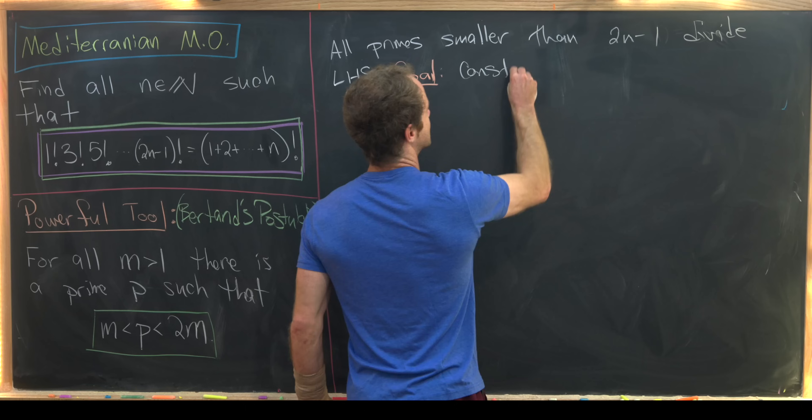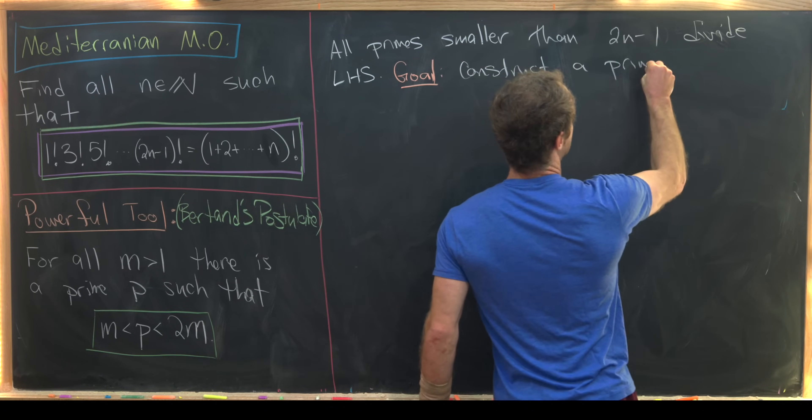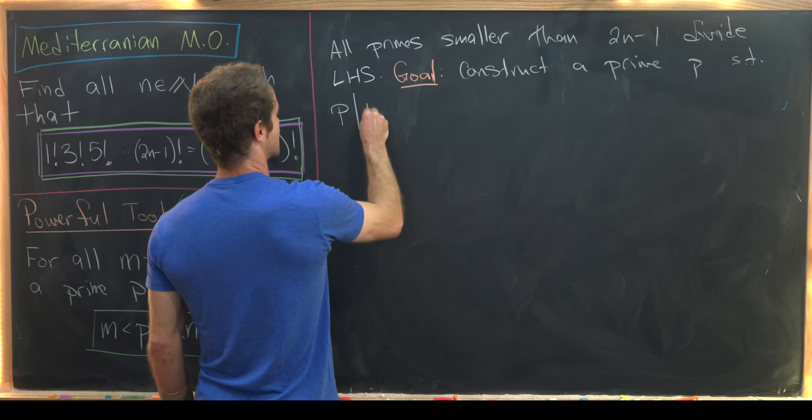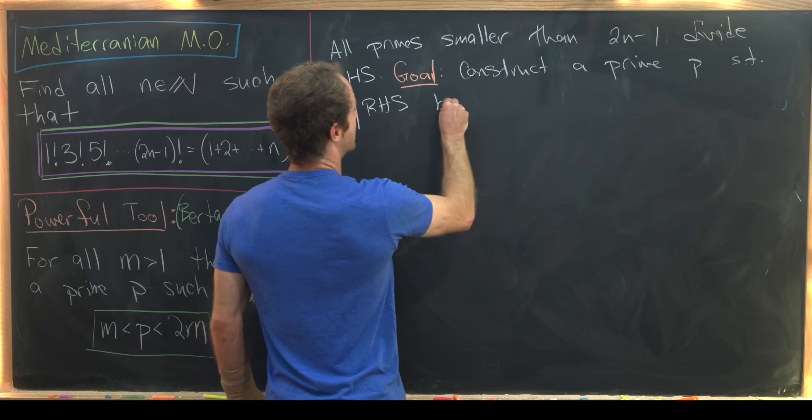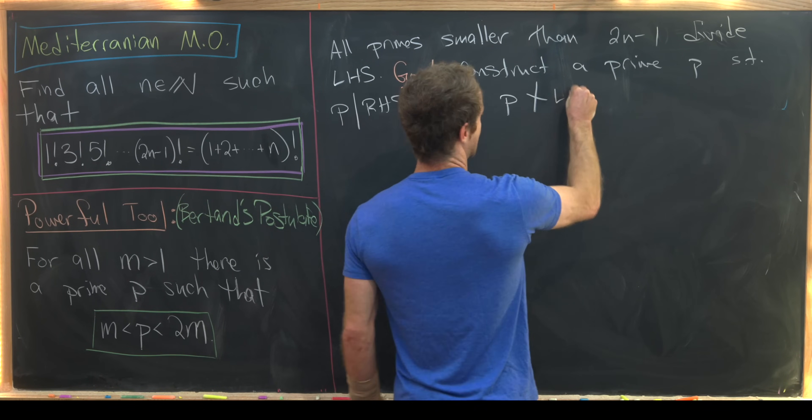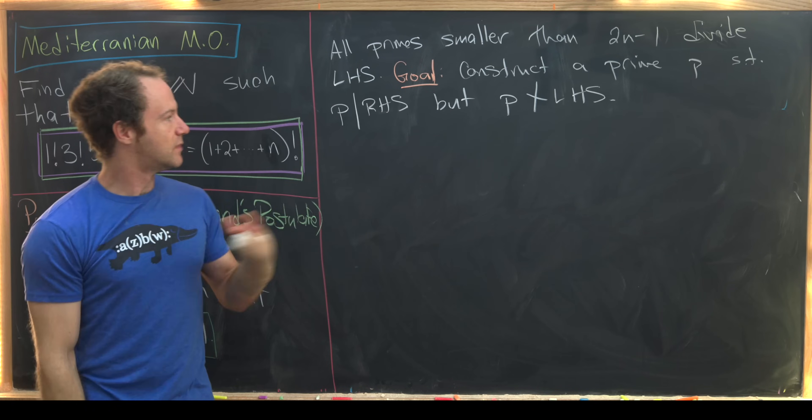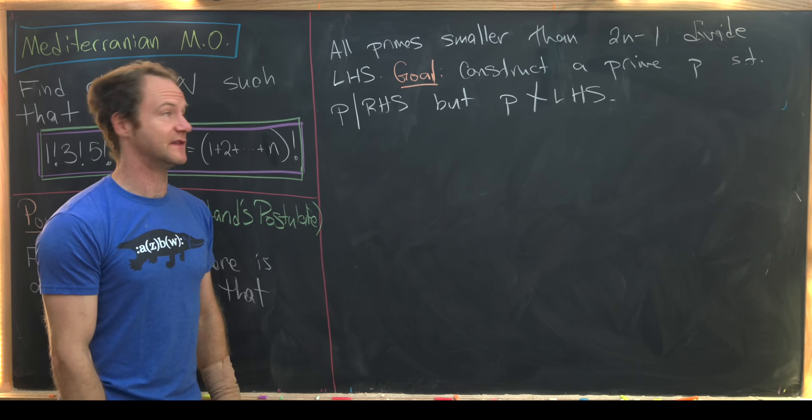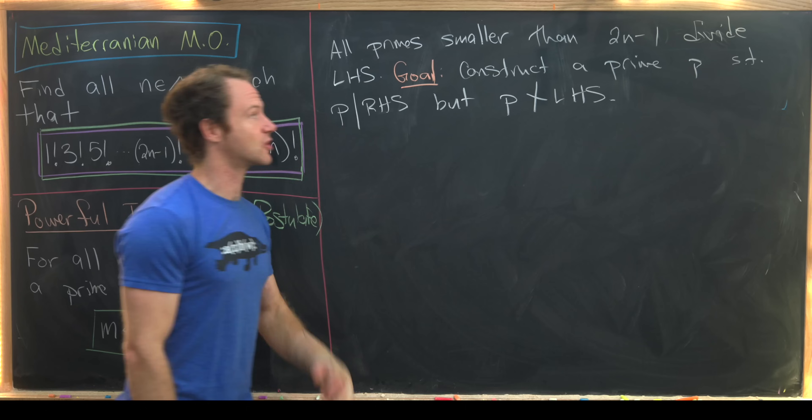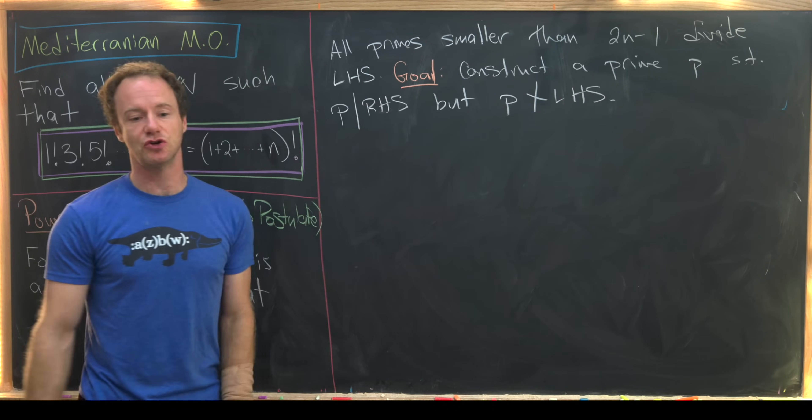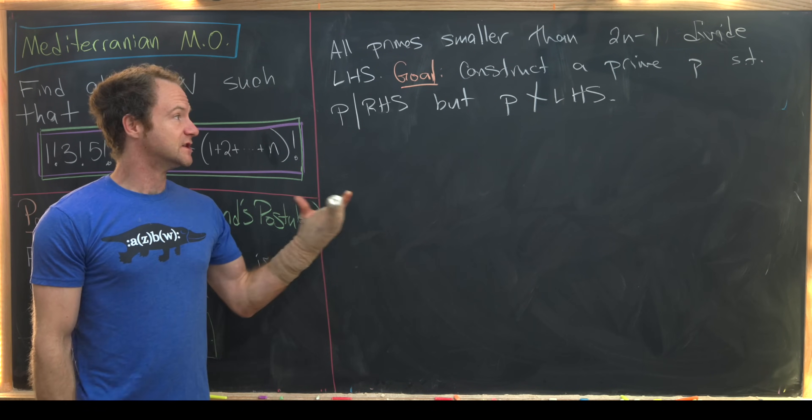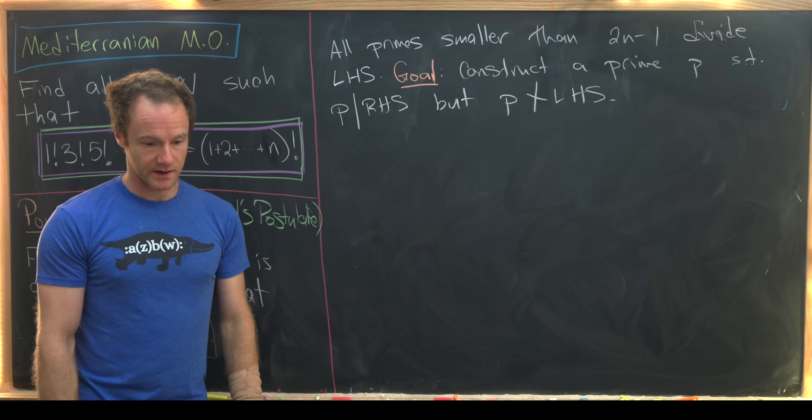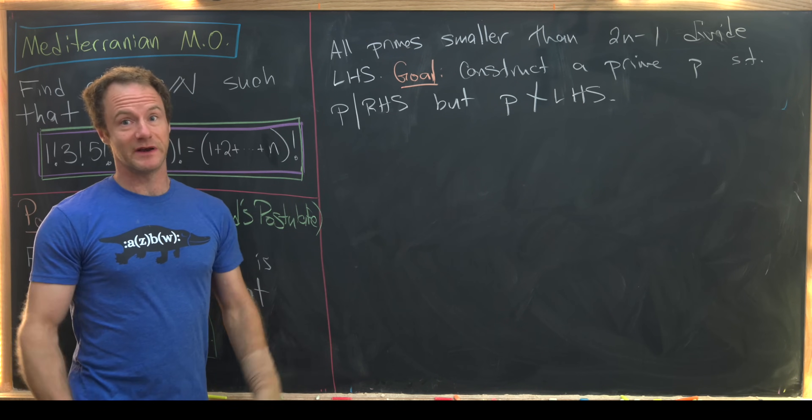So let's write that down. Construct a prime I'll call it p such that p divides the right-hand side but p does not divide the left-hand side. But luckily we've got a good handle by our earlier observation of all of the primes that divide the left-hand side, and those are all of the primes up to and possibly including 2n minus 1. So what prime should we take? Well, it's got to be a prime larger than 2n minus 1.